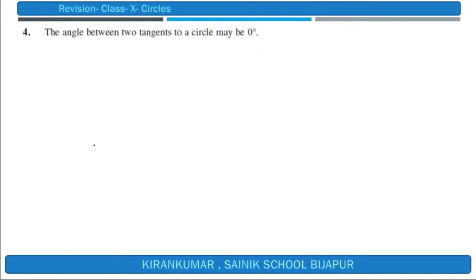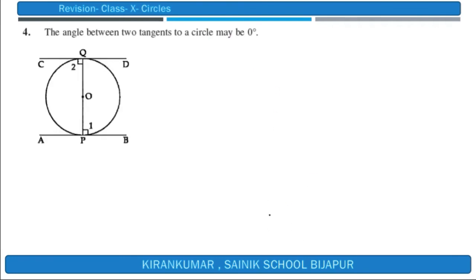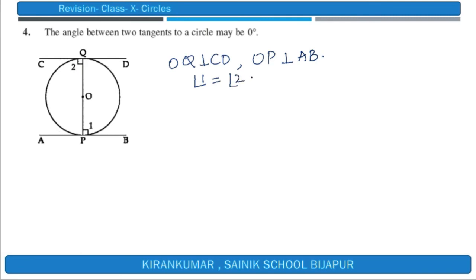Statement 4: the angle between two tangents to a circle may be zero degrees. Consider two tangents that are parallel and opposite to each other. OQ is perpendicular to CD and OP is perpendicular to AB. Angle 1 and angle 2 are both 90 degrees.